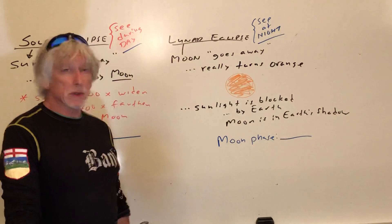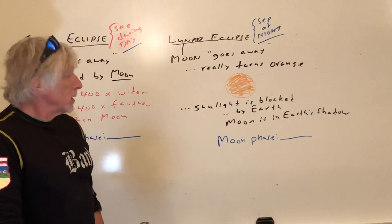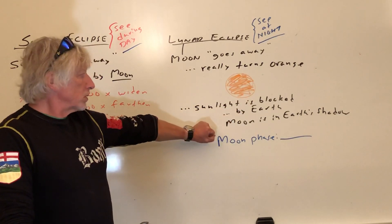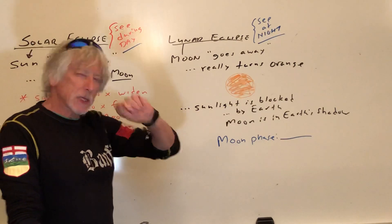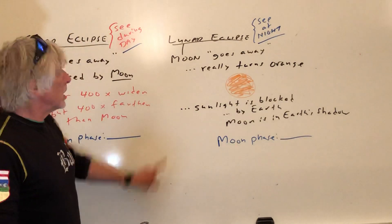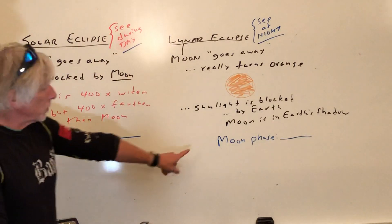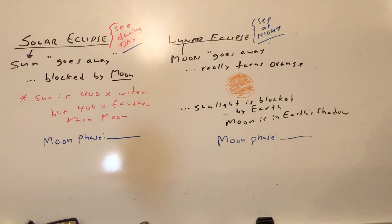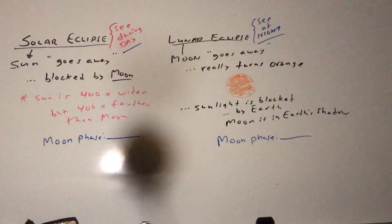On a lunar eclipse, the moon doesn't go away — it turns orange. The sunlight is blocked by Earth, meaning the moon is in Earth's shadow. We're cheating a little bit, but I'm giving you a taste of what's going on. You see a lunar eclipse at night. What moon phase would that be? Let's take a look.